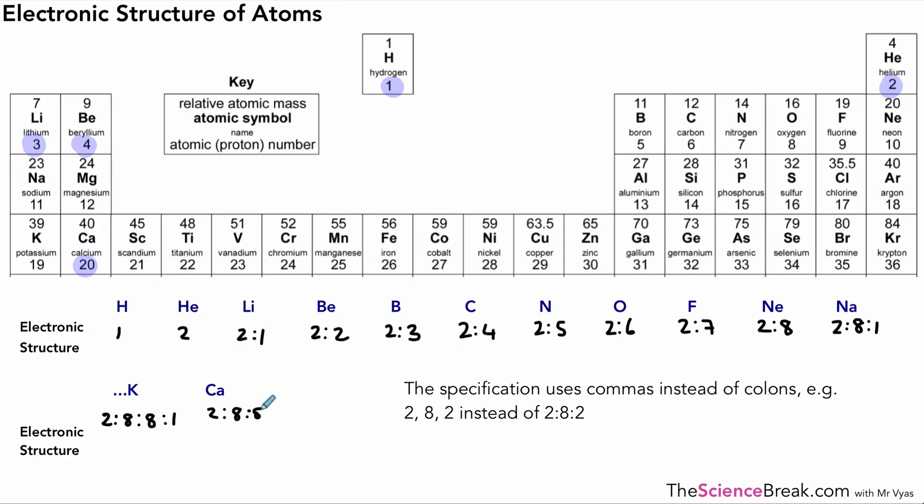And then calcium we have the final one: 2, 8, 8, 2. Okay, so there we go - how to draw the electronic structure on diagrams or in written form.